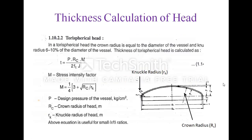The first one is a torispherical head. In a torispherical head, the crown radius is equal to the diameter of the vessel and the knuckle radius is 6 to 10 percent of the diameter of the vessel. The thickness of a torispherical head is calculated using the formula t = p·rc·m / (2·f·j), where rc is the crown radius, m is the stress intensity factor given by m = (1/4)(3 + √(rc/rk)), p is the design pressure, and rk is the knuckle radius. This equation is generally used for small r/t ratio, that means for thin-wall pressure vessels.